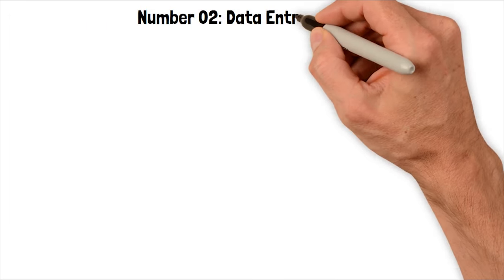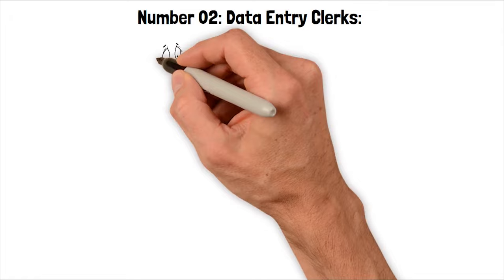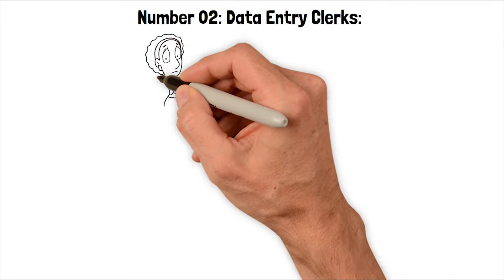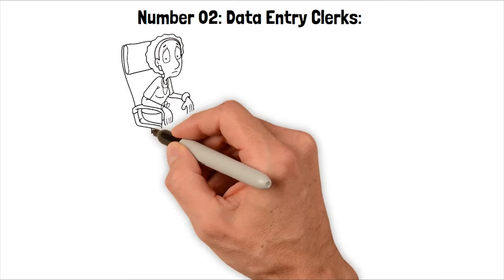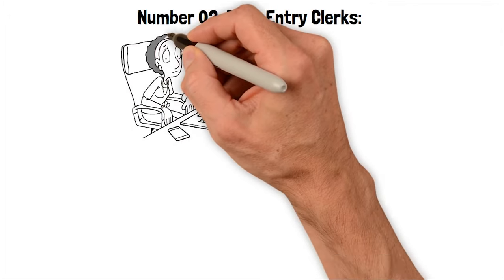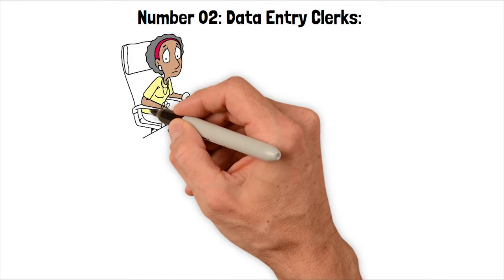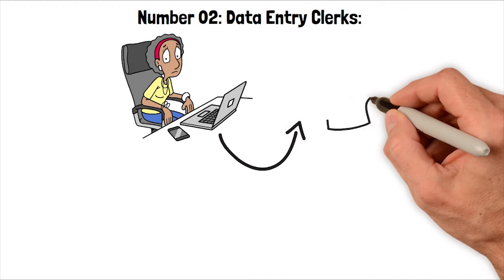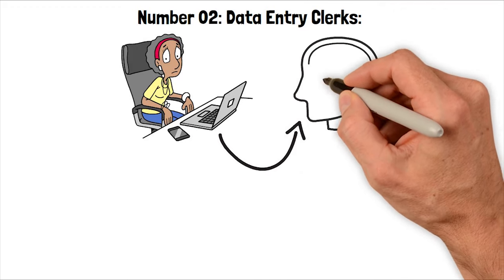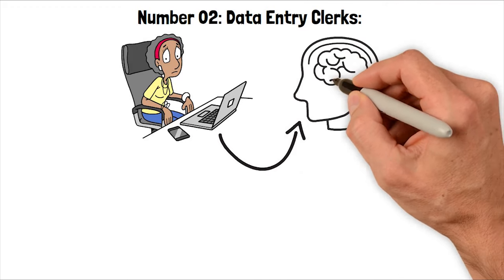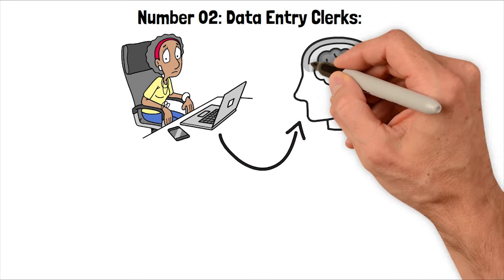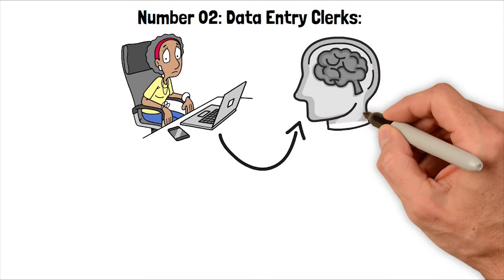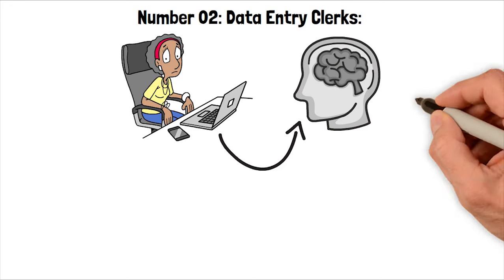Number two, data entry clerks. Data entry clerks are finding their roles increasingly redundant in the face of AI advancements. With the rise of AI-powered data extraction and input systems, the need for manual data entry is rapidly diminishing. These automated systems can swiftly and accurately process vast amounts of data, eliminating the errors and inefficiencies that can occur with human data entry clerks.